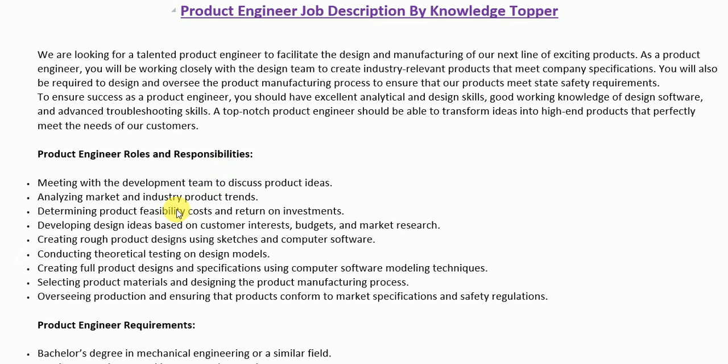After the job summary section we have the detailed roles and responsibilities section, which includes more detailed roles and responsibilities that must match with the skills of a potential candidate. All these roles and responsibilities are important and generally are part of every job description of a product engineer, but companies may include or exclude items as per their own requirements.